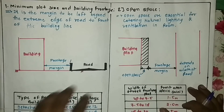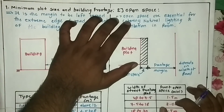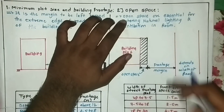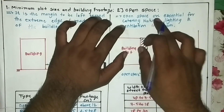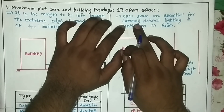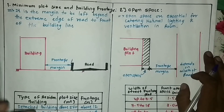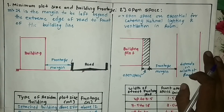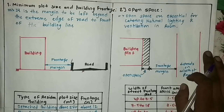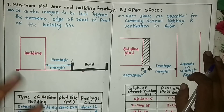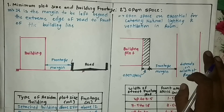Now we come to open space. Open spaces are essential for catering natural lighting and ventilation in rooms. We need open space around the building — in the front where we put verandas and balconies. From that open space we gather natural light and ventilation, and there are bylaws for keeping this open space.